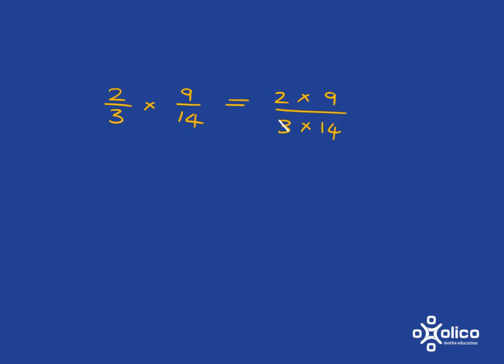We can see that 3 can divide here and also here. And we can see that 2 can divide into the numerator as well as into the denominator. And now we have very simple multiplications to do. 1 times 3 is 3 and 1 times 7 is 7.